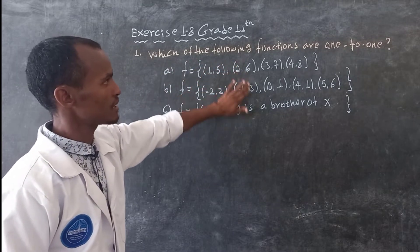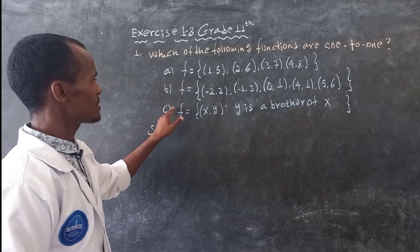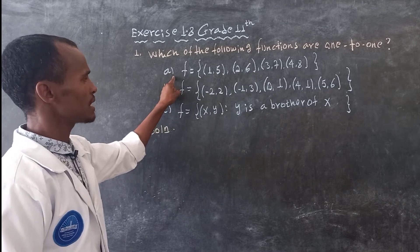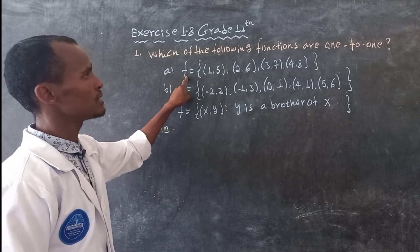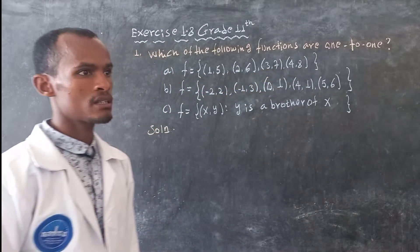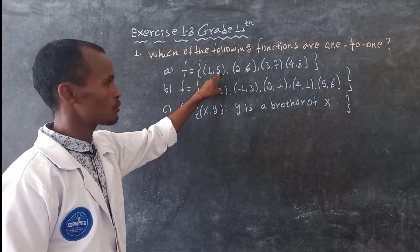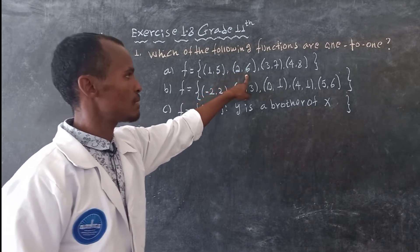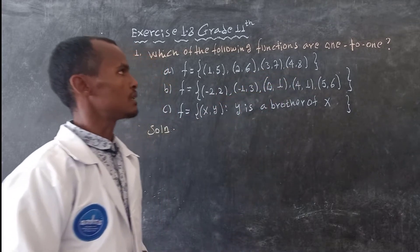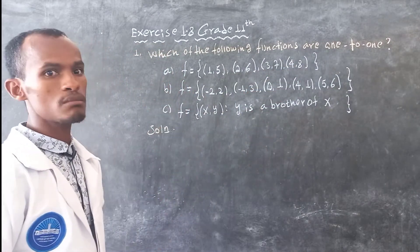Which of the following functions can be used as a one-to-one function? The function which is given to us has the ordered pairs: one and five, three and six, three and four, then four and eight. Let's design our definition, which are called a range.